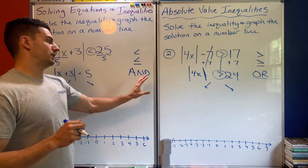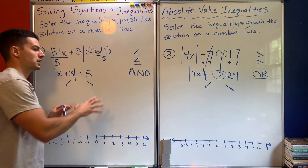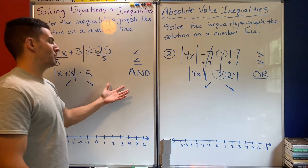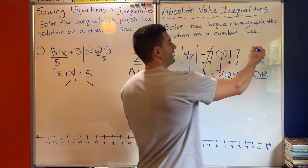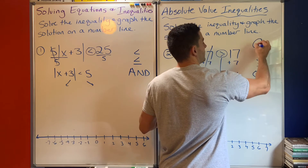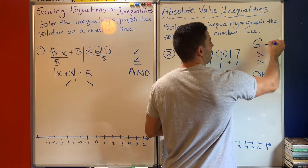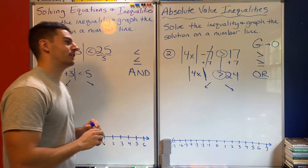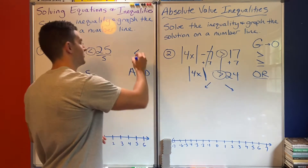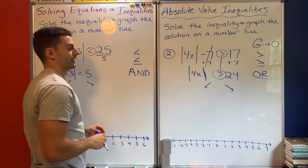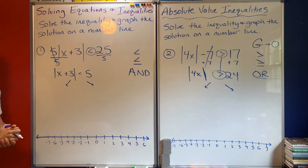You know whether it's 'and' or 'or' right off the bat. A fun way to remember: greater than — capital G — kind of looks like an O, almost. So greater than or equal to is an 'or', and a less than or equal to goes with 'and'. If you can think of other fun ways to remember that, great.